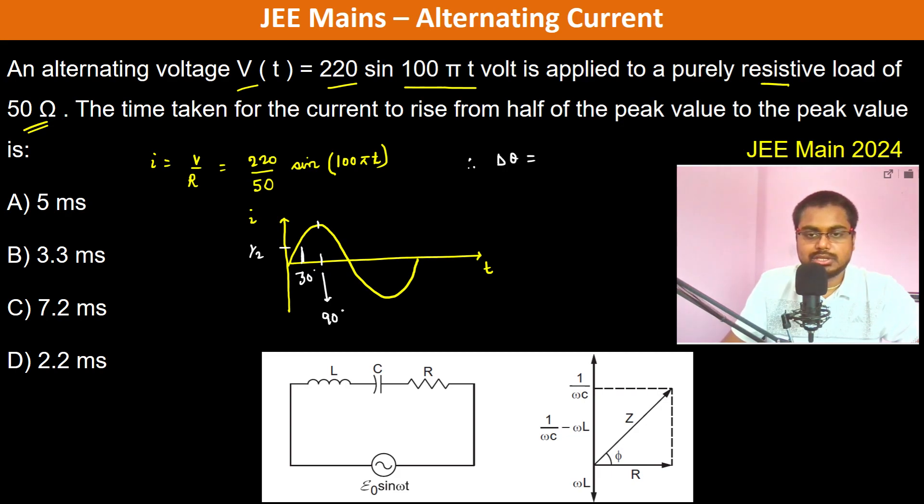Which is equal to π/3. So therefore 100πt should be equal to π/3. Pi and pi cancel out.